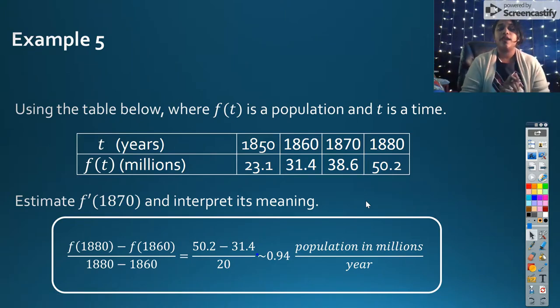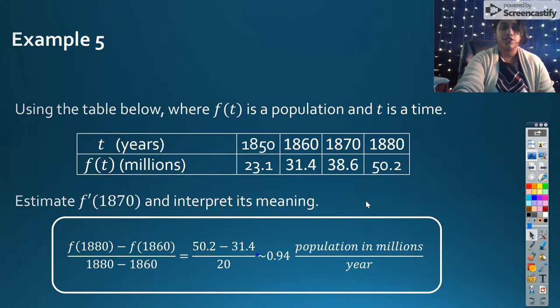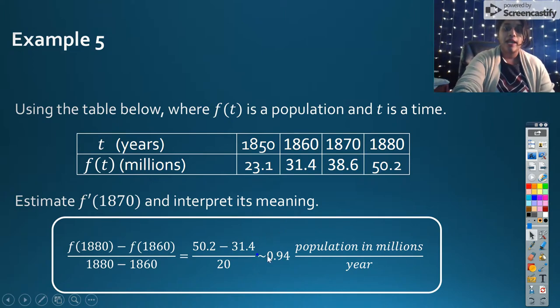We're going to look at both 1880 and 1860. So we see that we have a rate of change of 0.94 population in millions per year. So that's just another example of how we do instantaneous versus our average. But as you can see, I made sure to put in, it's an estimation. It's not an equal, it does not equal it.